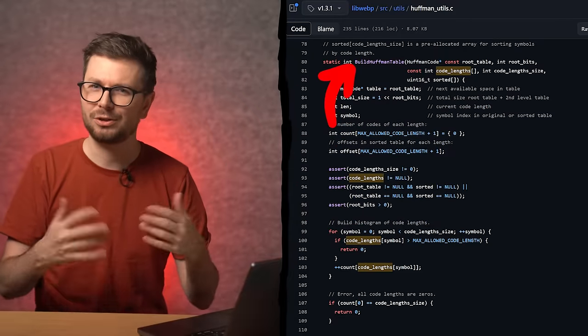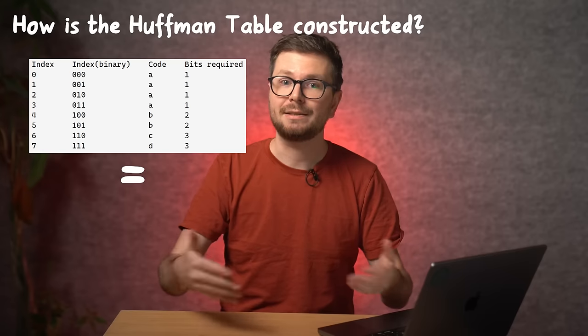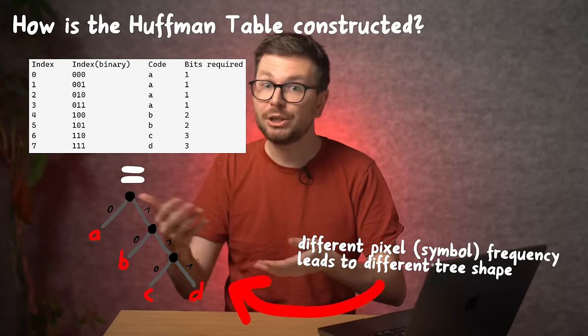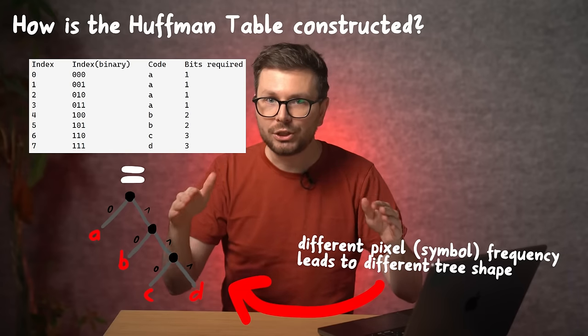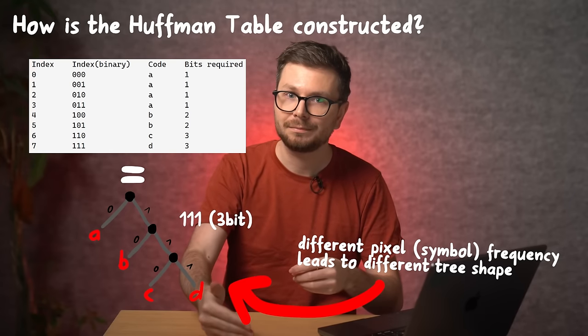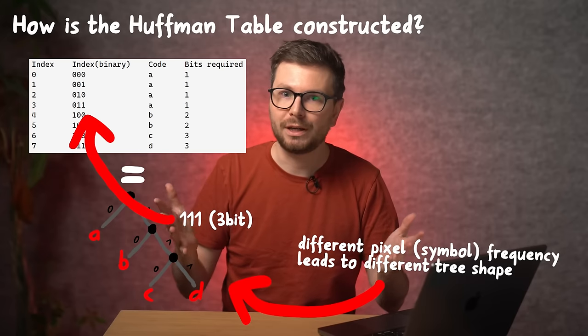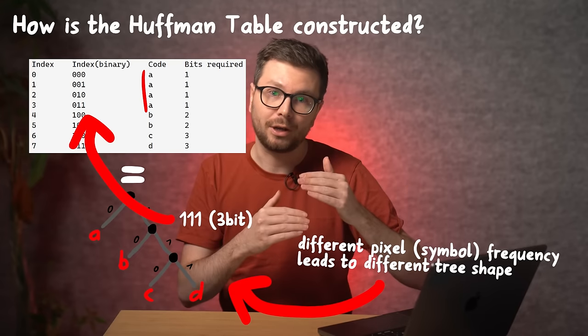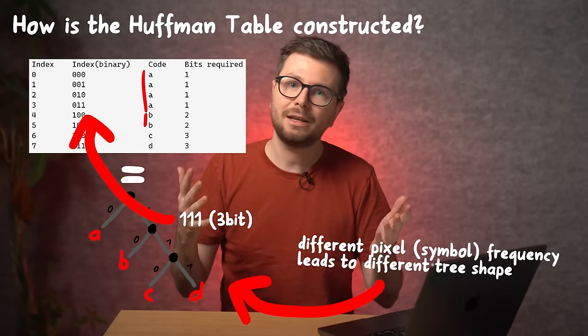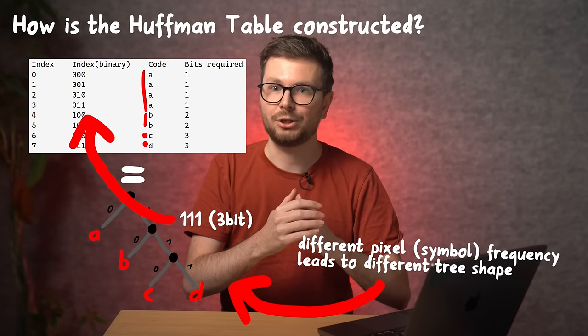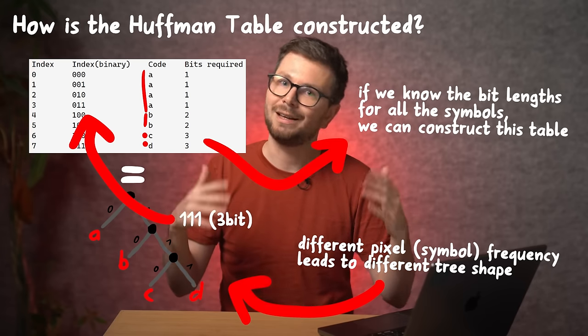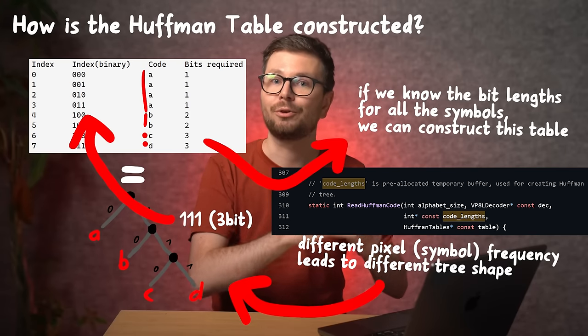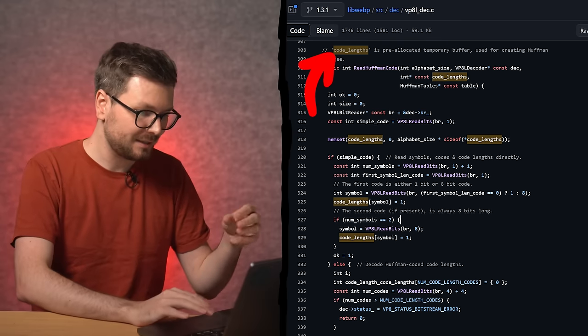This table is then passed to VP8LBuildHuffmanTable along the code length buffer. And then it calls BuildHuffmanTable. And in here is where the heap overflow finally happens. But how is the table now constructed? Let's think about this. The table represents a Huffman tree, right? Each image that we compress will have different pixel values or symbols. So the Huffman tree shape depends on the frequency of the symbols in the input. And the tree shape then determines the Huffman code bit lengths. And these bit lengths then determine the table size. This means the code length information is all we need to construct a table. And maybe you have already guessed, that is exactly the role of the code length array. This array simply stores for each symbol the code length.